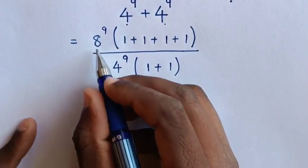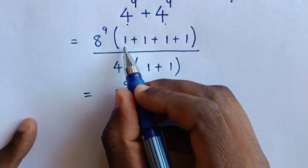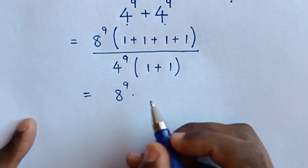Then this will be equal to 8 power 9 times the sum of 1 plus 1 plus 1 plus 1, which is 4.